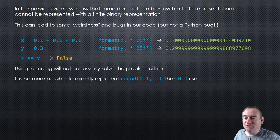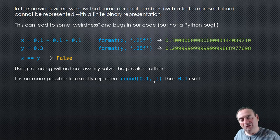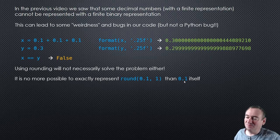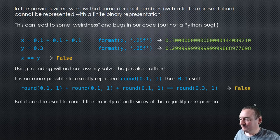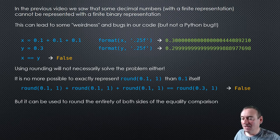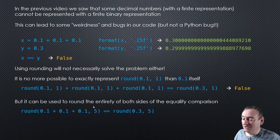Now using rounding isn't necessarily going to solve the problem either, depending on how you use it. You can't expect round(0.1, 1) — rounding 0.1 to one decimal point — to give a better or more precise representation. It's going to be the same. So if we try and do something like that, we end up with the same problem; it also evaluates to false. But you could use rounding if you apply it to the entirety of both sides of your equality comparison. You might say round the summation to five decimal points and test that it equals round(0.3) to five digits — and obviously that will be true.